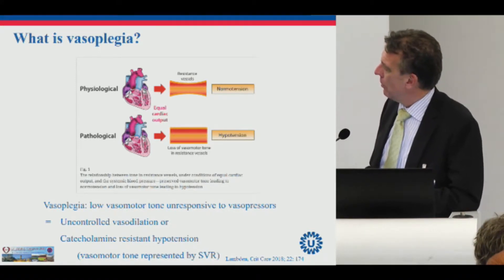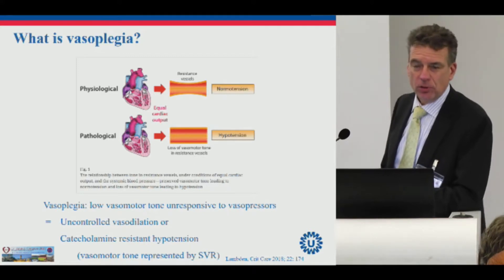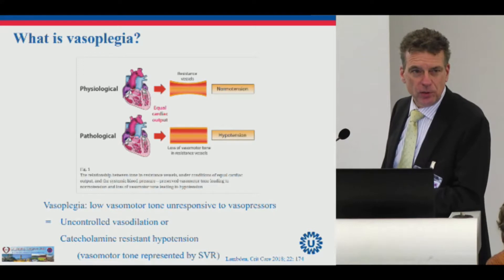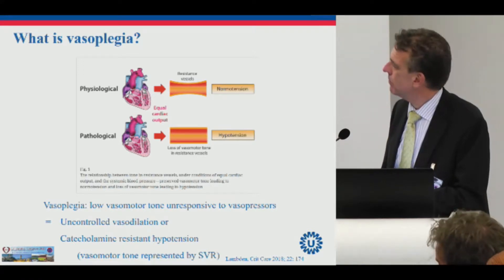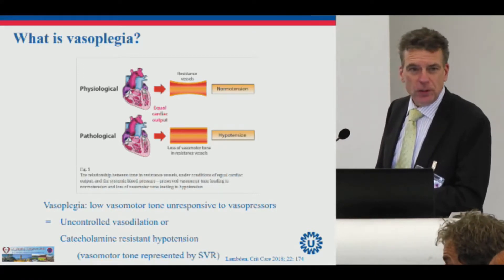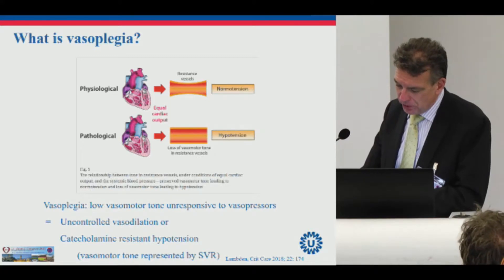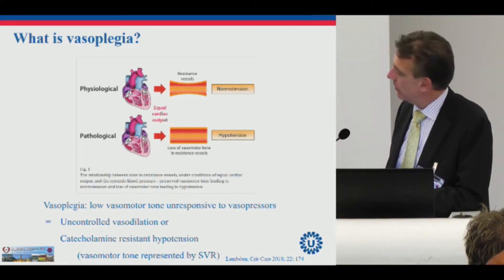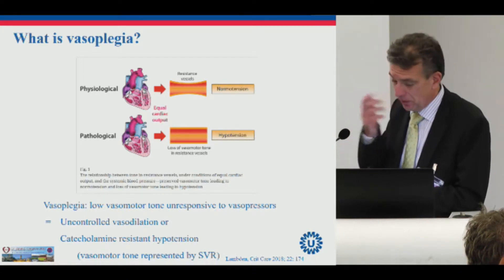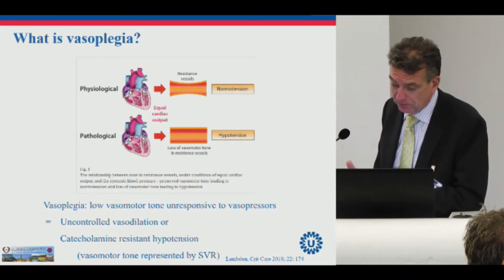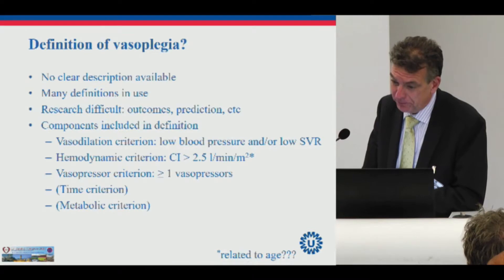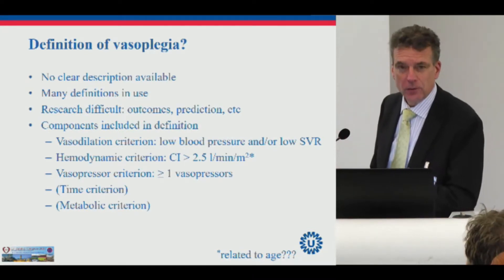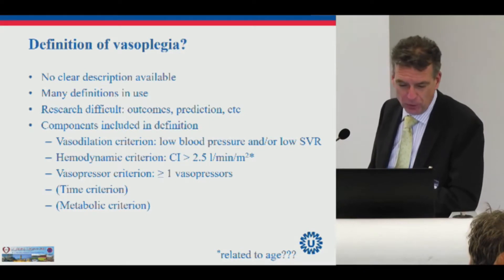However, we cannot measure vasomotortone — it's quite difficult. We can measure arterial blood pressure; we do it every day, it's in daily practice. And we do not measure every day a systemic vascular resistance. But systemic vascular resistance is related to mean arterial pressure. What about vasomotortone? I don't know, but it's important to know. Probably in future research you have to think about vasomotortone.